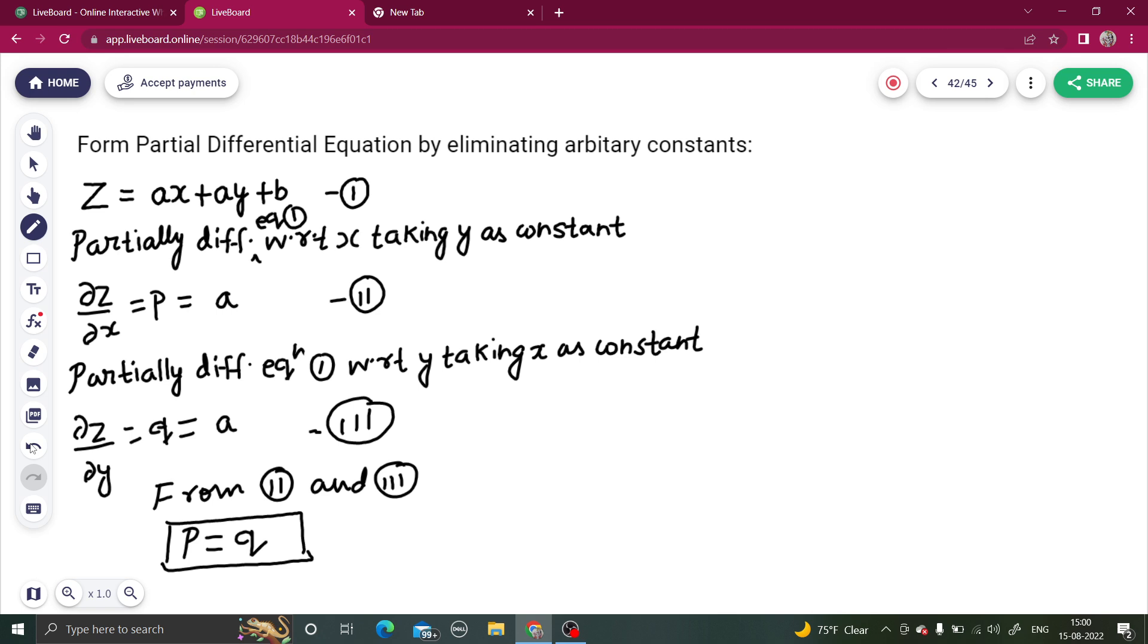So p equals to q is the solution of this equation. Later on, when you solve PDEs and get this question p equals to q, the solution will come out to be z equals to ax plus ay plus b. I hope you understood it. Thanks and have a very nice day.